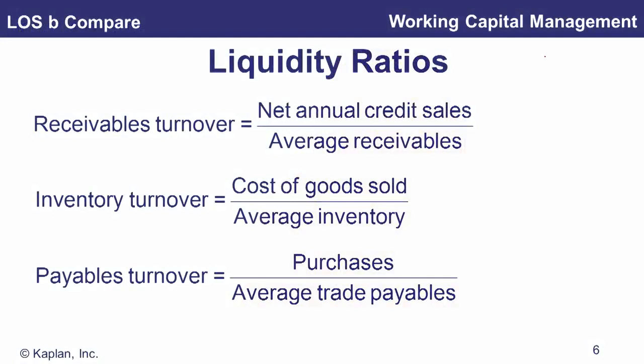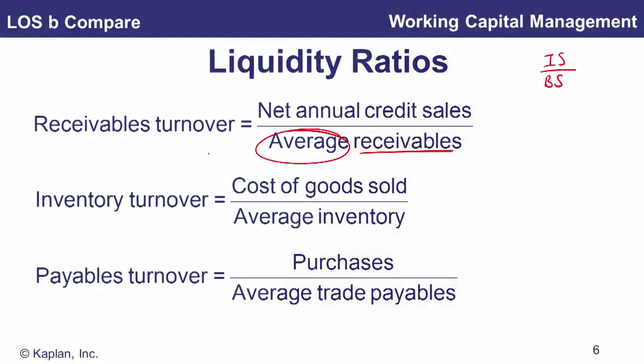Turnover ratios are an income statement number divided by the corresponding balance sheet figure. Receivables turnover is sales over average receivables — we use average receivables because the income statement covers a period while the balance sheet is a point in time. Inventory turnover uses cost of goods sold over average inventory, and payables turnover uses purchases over average payables.